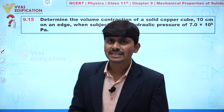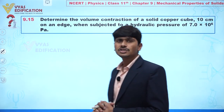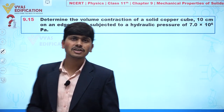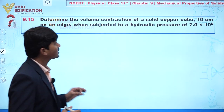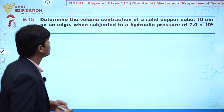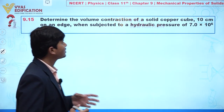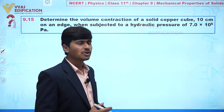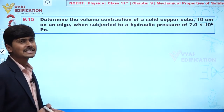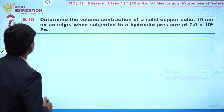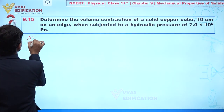We are going to discuss question number 9.15. In this question, we need to determine the volume contraction of a solid copper cube 10 centimeters on an edge, when subjected to a hydraulic pressure of 7 × 10⁶ Pascal. Our objective in this question is to calculate the change in volume.